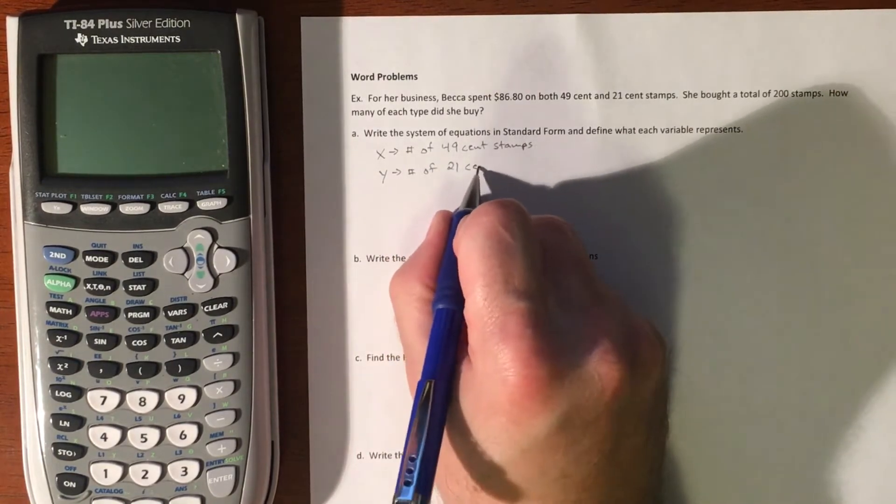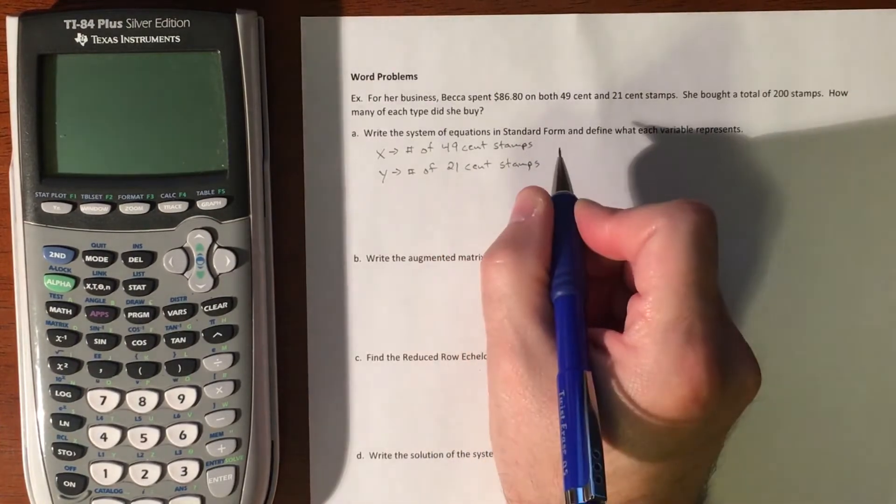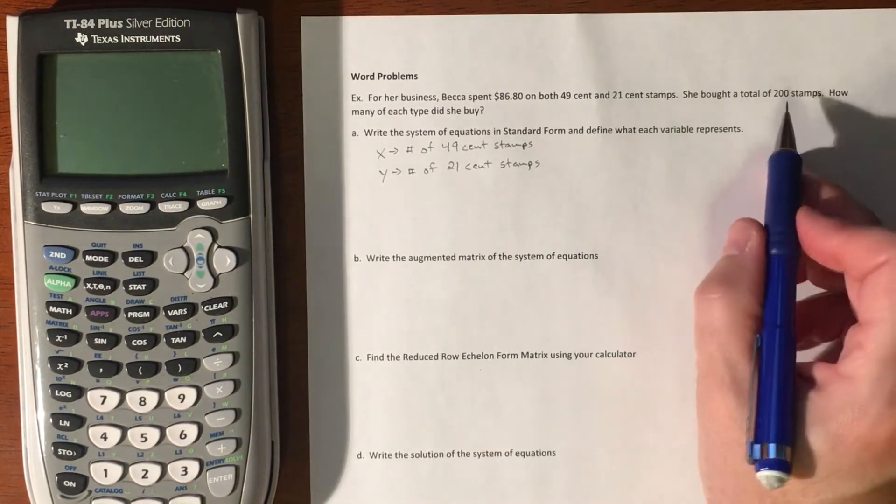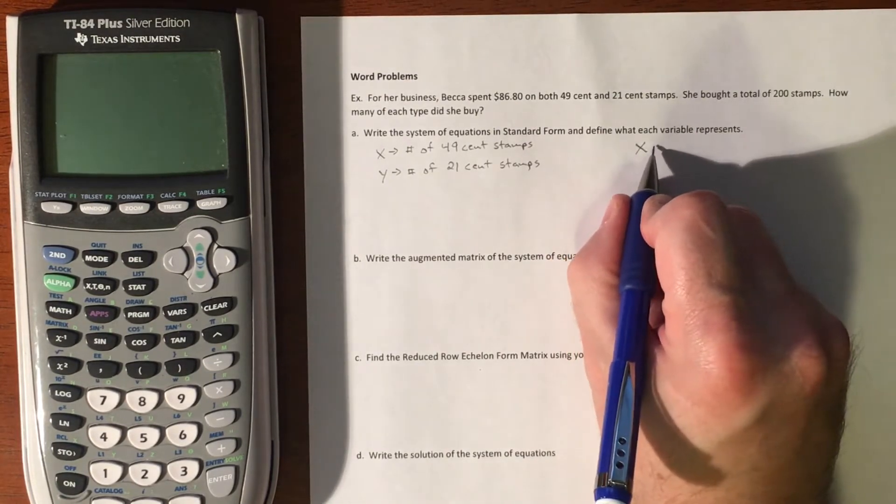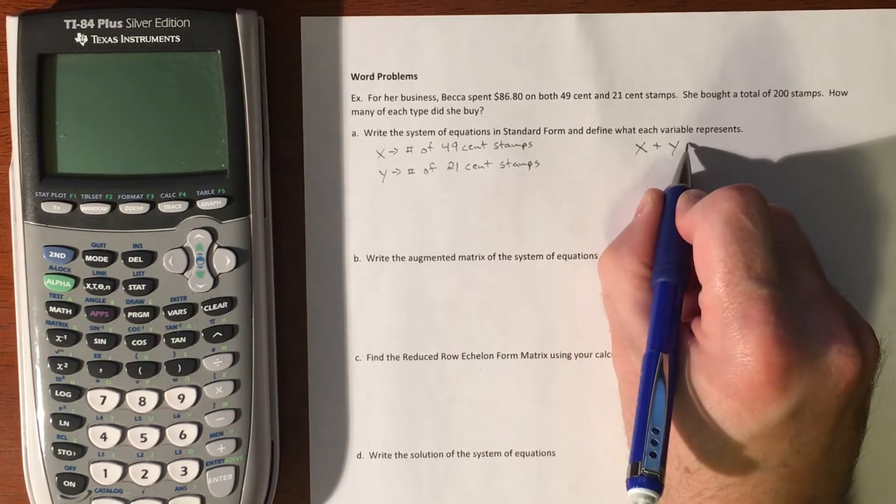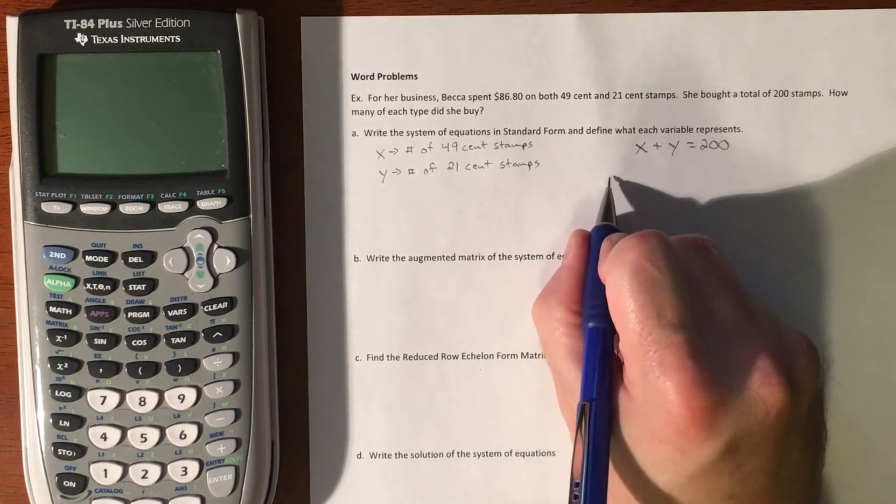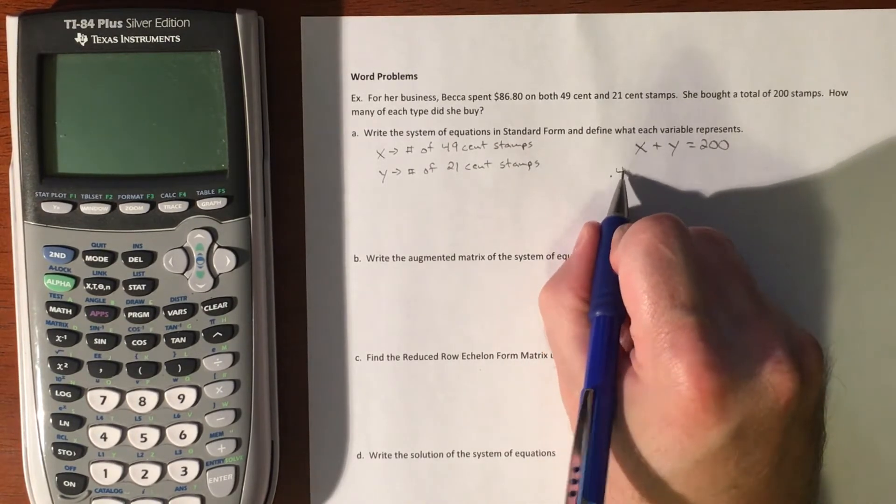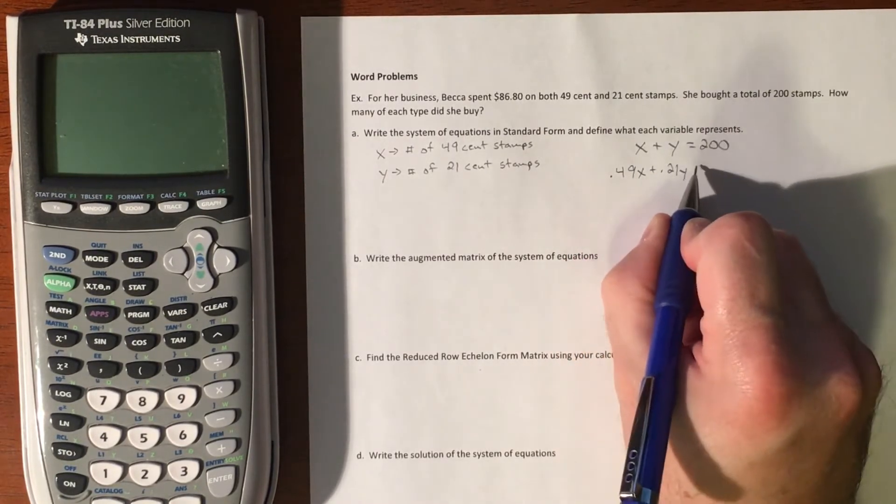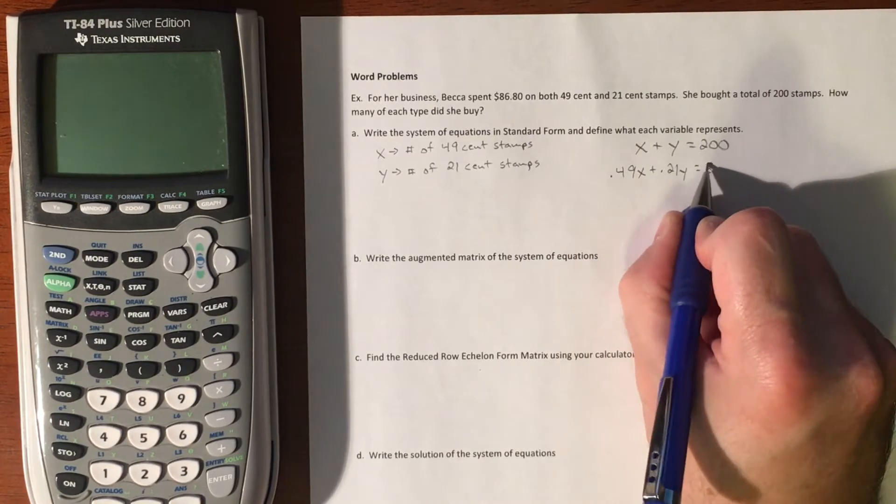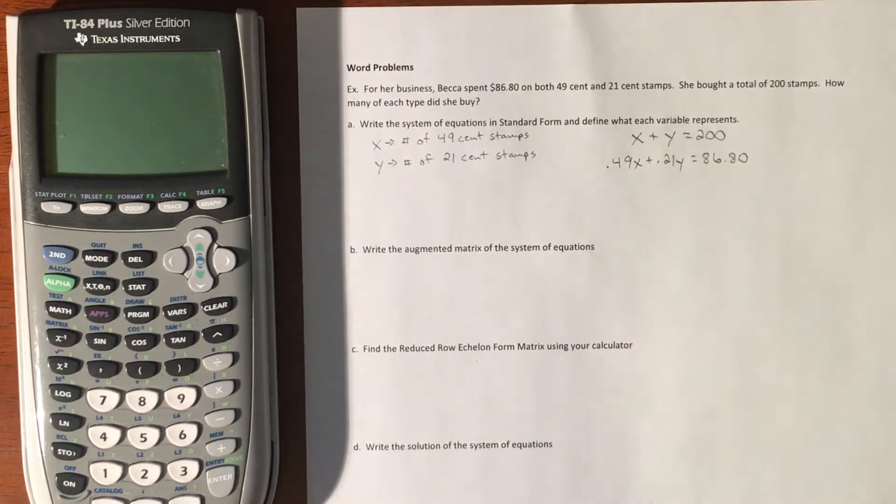We have a dollar value and a quantity. The quantity is 200 stamps, so X plus Y equals 200. Then we have a dollar value: 0.49X plus 0.21Y equals 86.80. This is our setup to use the calculator.